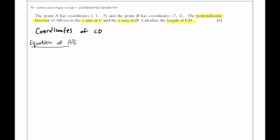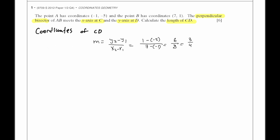We have two points, and using that we can find the slope. Slope equals y2 minus y1 over x2 minus x1, which is 1 minus minus 5 over 7 minus minus 1, which is 6 over 8, simplified as 3 over 4. We just need the slope because we're dealing with the perpendicular.